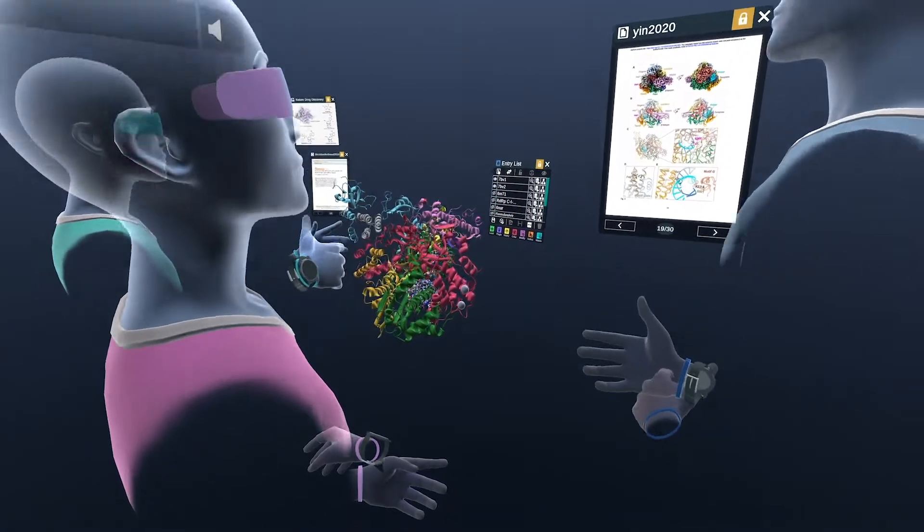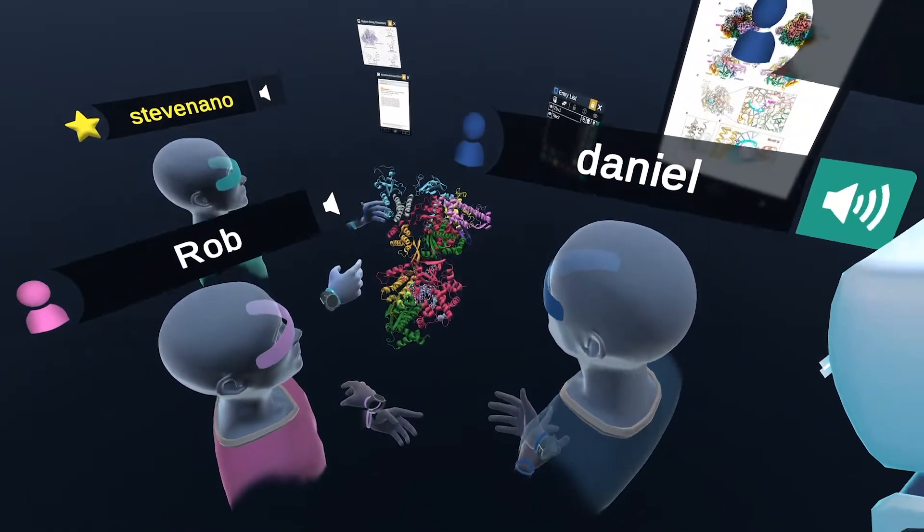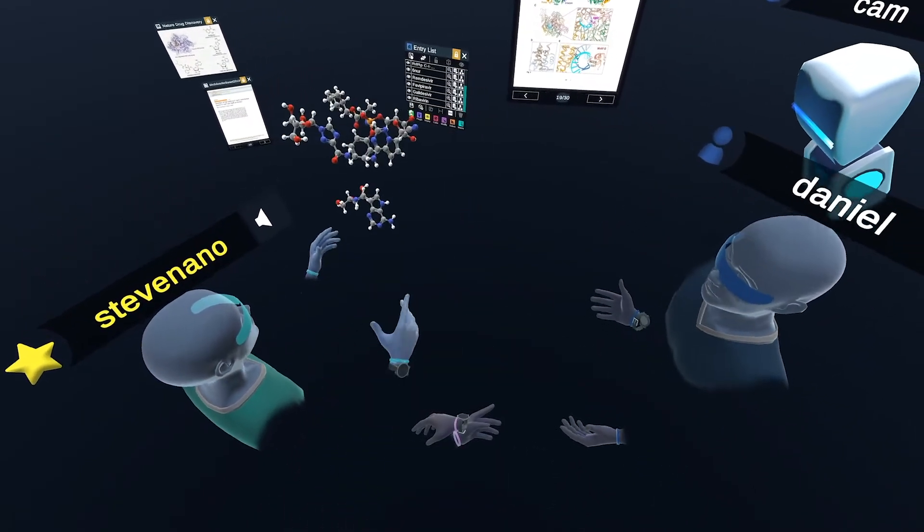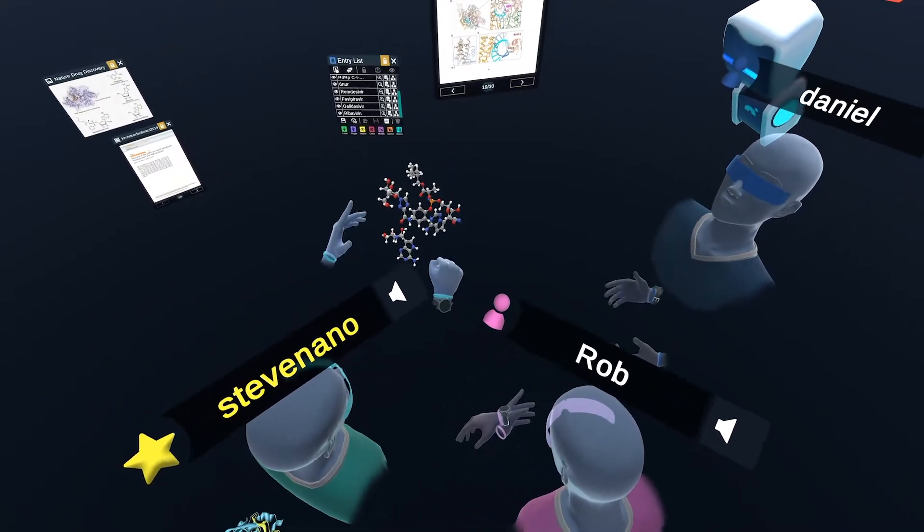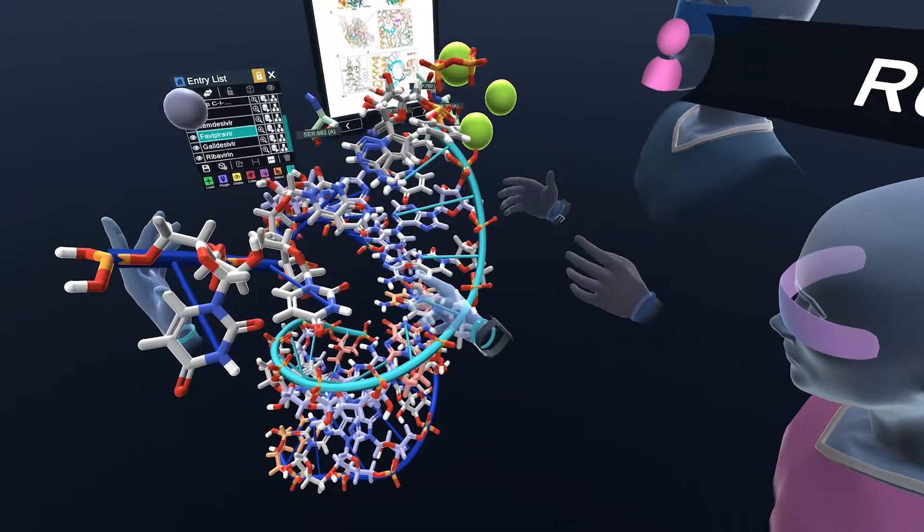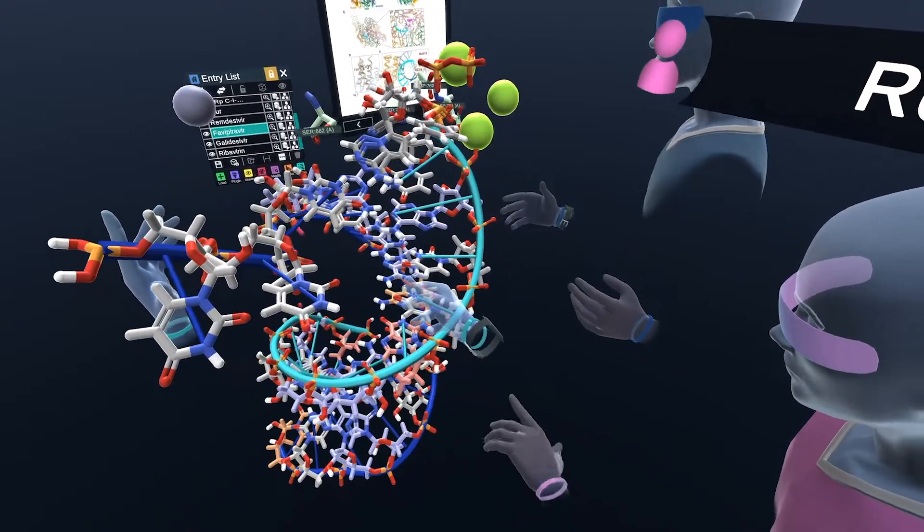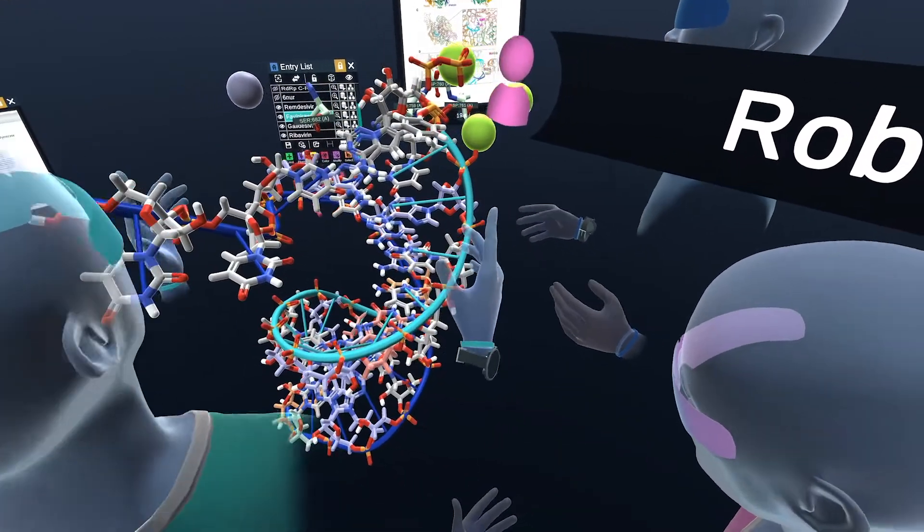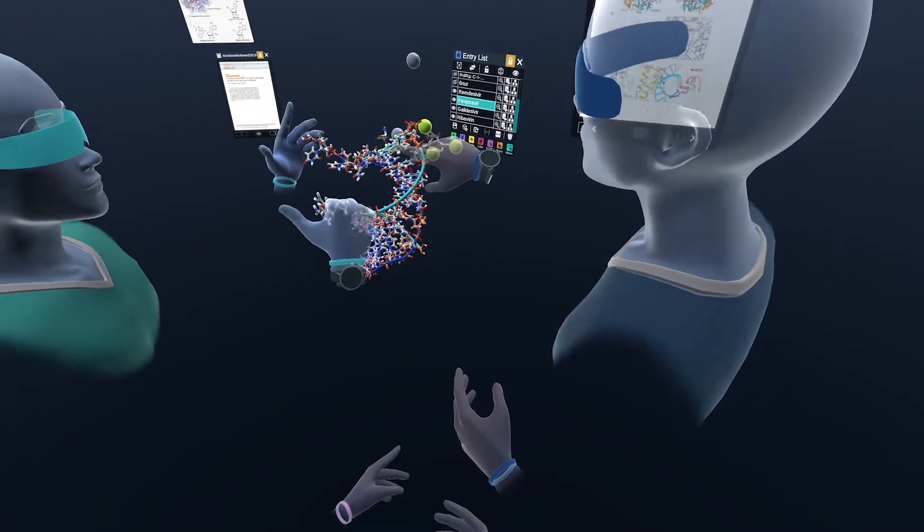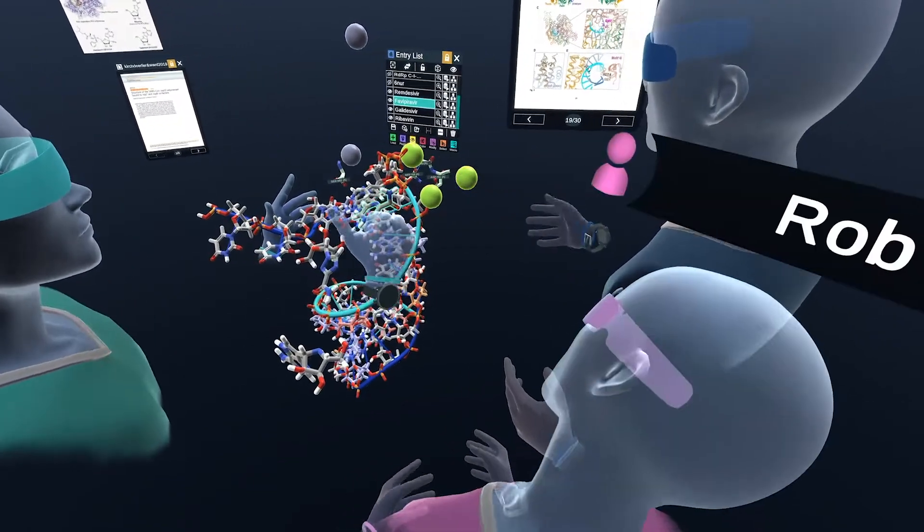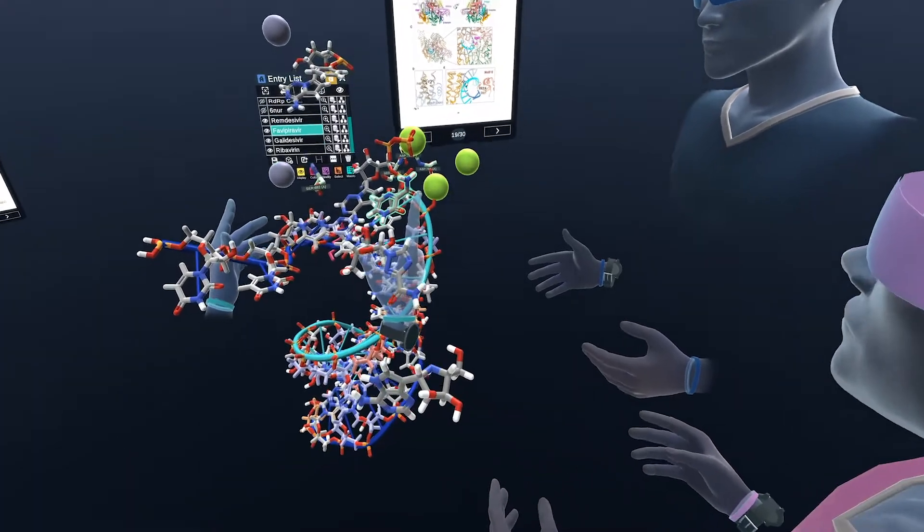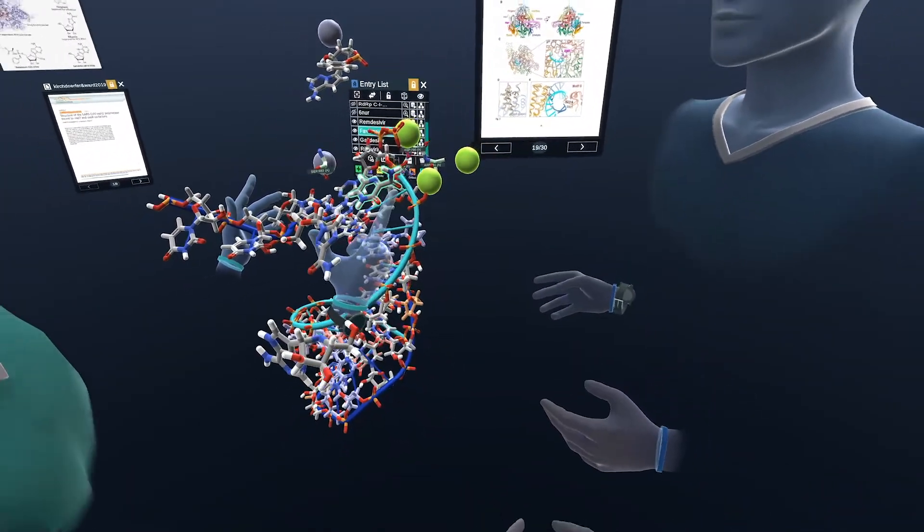So remdesivir was developed originally for Ebola virus and also Marburg virus. And I think it's been also tested for HIV virus. And the reason for that is because they're all RNA viruses, just like this coronavirus as well. That's the reason it's been tested in this last outbreak and it appears to be working pretty good. You had a few other structures. So we have favipiravir, galadesivir and ribavirin. So those are also being tested for RNA virus as well. This one is actually approved in Japan for the flu. This favipiravir.